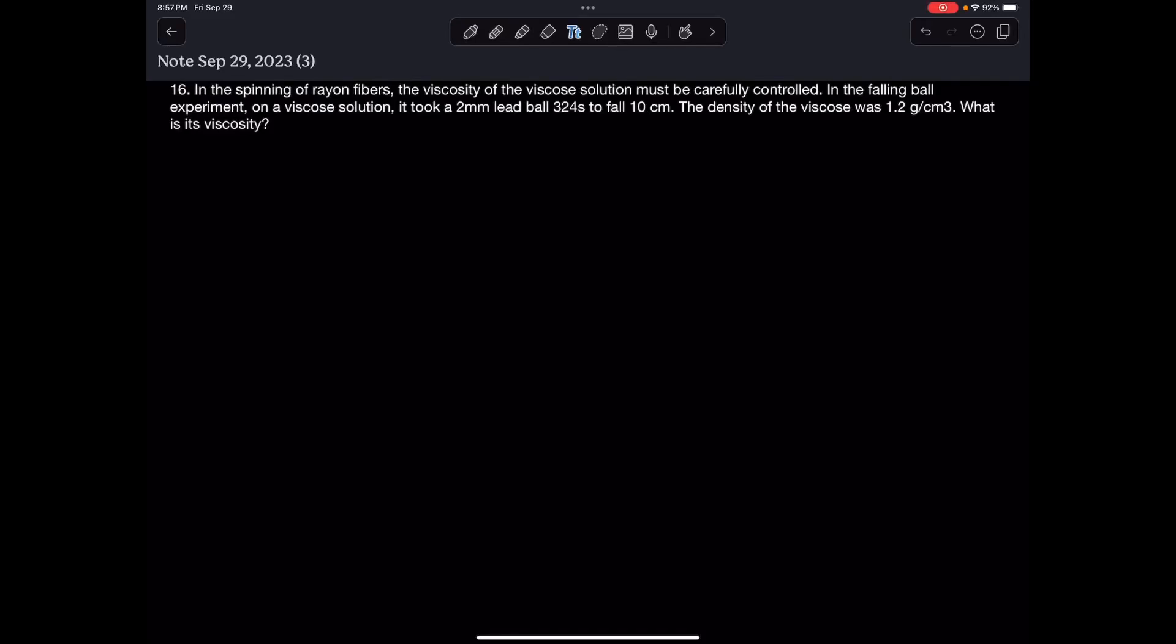In the spinning of rayon fibers, the viscosity of the viscose solution must be carefully controlled. In the falling ball experiment on a viscose solution, it took a 2 mm lead ball 324 seconds to fall 10 centimeters. The density of the viscose was 1.2 grams per centimeter cubed. What is its viscosity?